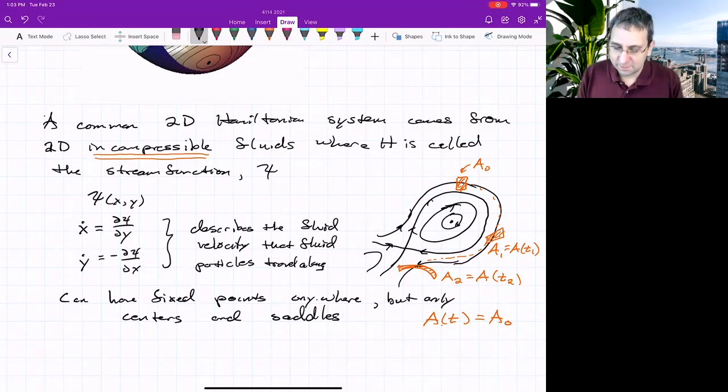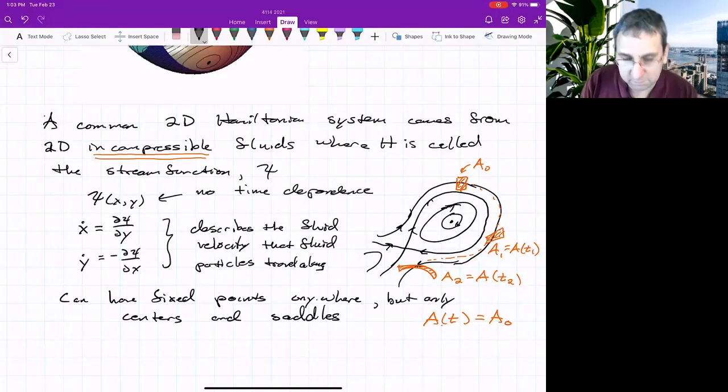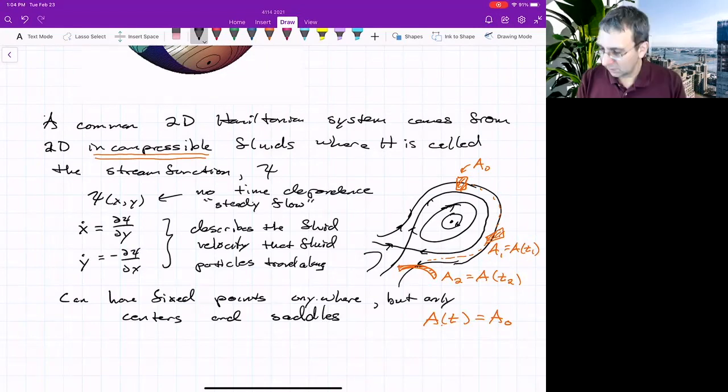That's why we get weather. But here we're saying, no, this is just the stream function independent of time. So this describes steady fluid flow. That's why we've got no time dependence. Time dependence makes things a little bit more challenging. It's still useful.